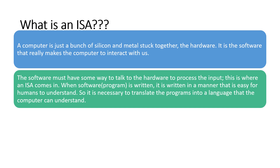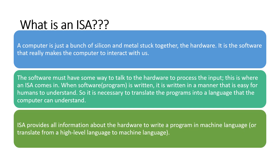When a computer software program is written, it is written in a manner easy for humans to understand. So it is necessary to translate programs into a language the computer can understand, and this is what instruction set architecture does.